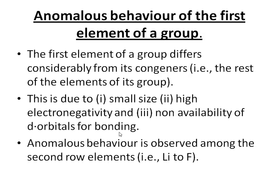Since hydrogen has only the s orbital — no d orbital — there is no formation of additional bonding like d-orbital bonding. Due to hydrogen's very small size compared to other elements, its high electronegativity, and non-availability of d orbitals, it shows anomalous behavior. Anomalous behavior is also observed among the second row elements from lithium to fluorine in the second period.